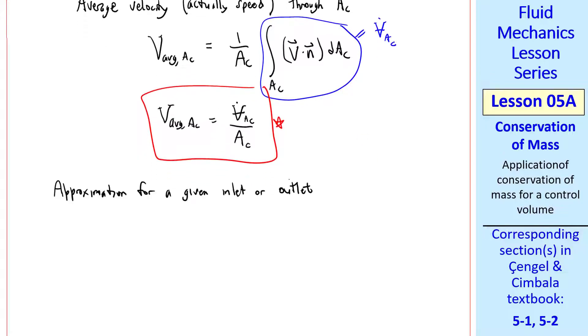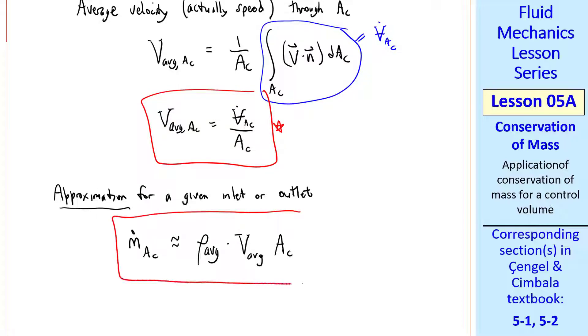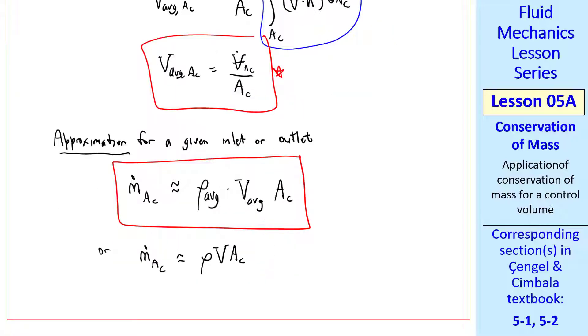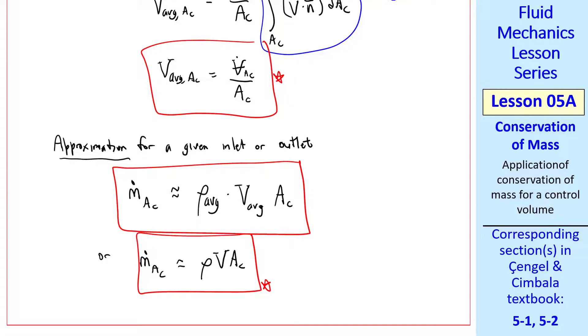For a given inlet or outlet, we can make this approximation. This will make our algebra easier. m dot AC, the mass flow rate through AC, is approximately the average density times the average velocity times AC. Again I use the word velocity when I really mean speed. And instead of writing that subscript AVG all the time, we often just write it this way without the subscripts. From the above equation, v AC is just v dot AC. So m dot AC is just rho times v dot AC. In other words, mass flow rate is just density times volume flow rate.